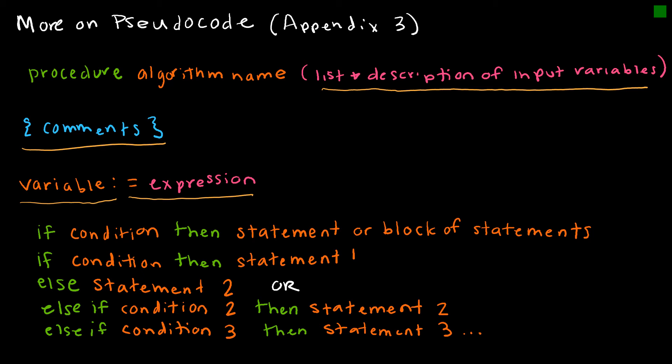And then you've got a lot of conditional statements, and we should be familiar with conditionals. But it might just be if condition, then statement, or if condition, then block of statements. Or it could be if condition, then statement 1, else statement 2, or if condition, then statement 1, else if condition 2, then statement 2, if condition 3, then statement 3, etc. So the else just says, if it's not this one, then it's going to be this one, or then it's going to be this one.